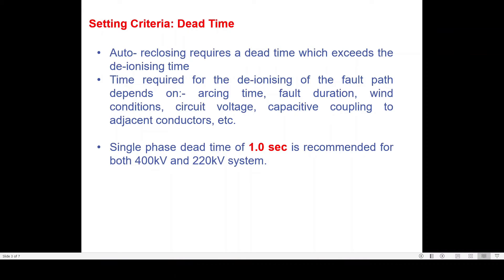Generally, dead time depends upon the arcing time of the circuit breaker, the speed of the circuit breaker — that means how quickly the moving contact separates from the fixed contact — the fault duration, wind condition, circuit voltage, as well as the capacitive coupling between adjacent conductors. For 220 kV and above, the dead time is selected as one second, but some utilities also select dead time as 600 or 800 milliseconds. This generally depends upon the circuit breaker duty cycle, which determines the minimum dead time that can be implemented in the autoreclosing scheme.